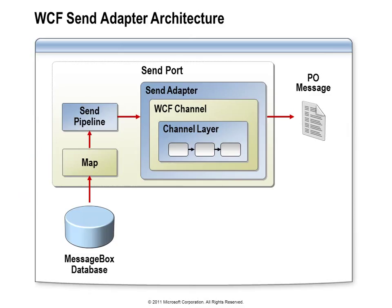When we send messages in BizTalk, we go through a map and a send pipeline, and then the message arrives at the Send Adapter. With the WCF Send Adapters, the adapter code creates what's called the WCF channel — the thing all WCF clients use to talk to a particular service endpoint. It takes the BizTalk message, converts it into a WCF message — essentially a SOAP message — and passes it down through its processing channels to do WS Security, WS Trust, and other protocols, then sends the message out over the transport.